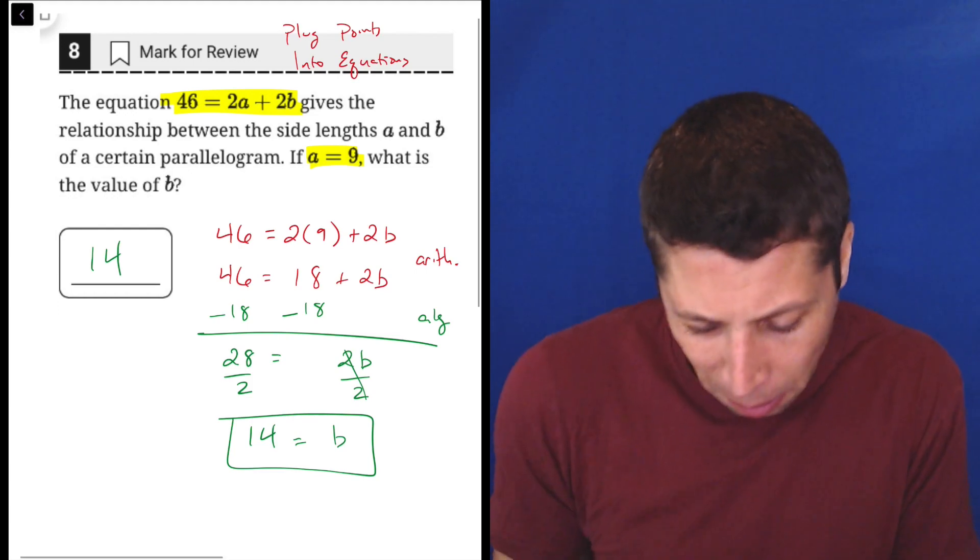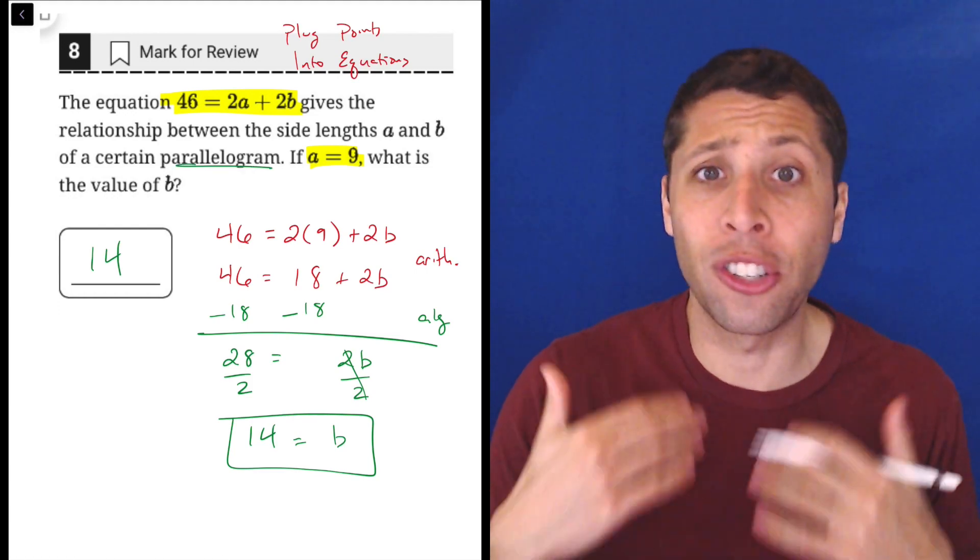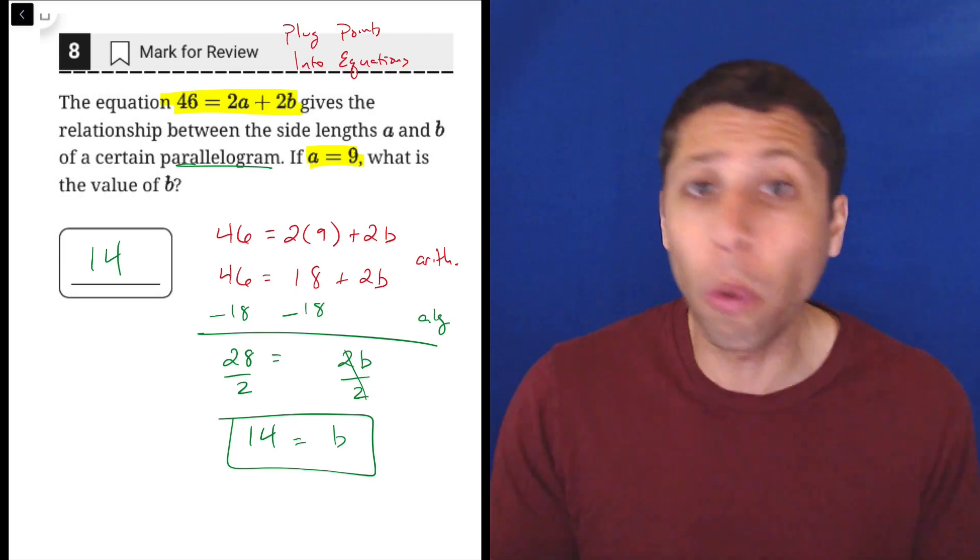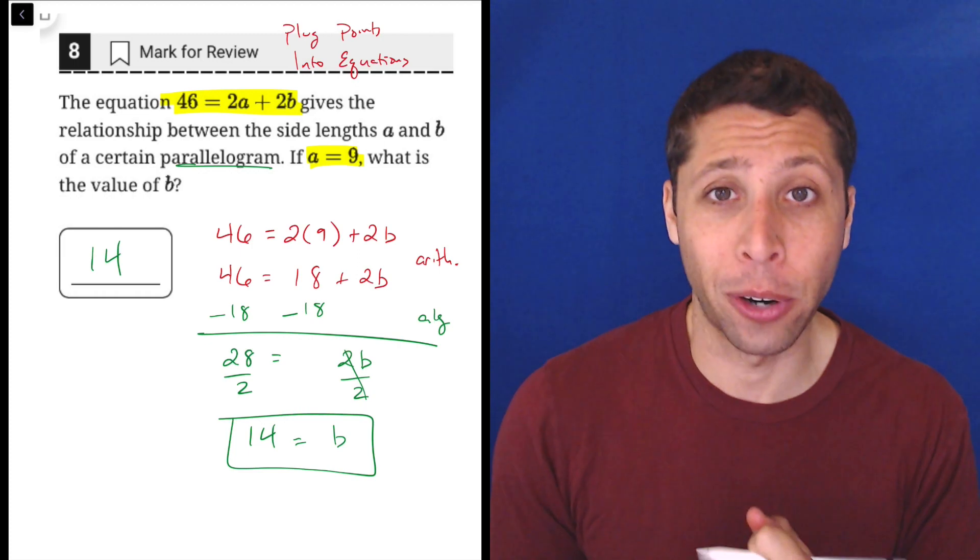So notice, it talks about a parallelogram, but I would not consider this a geometry question. This is an algebra question. The story is irrelevant. We are given an equation, we are given at least half of a point, and we need to find the other half.